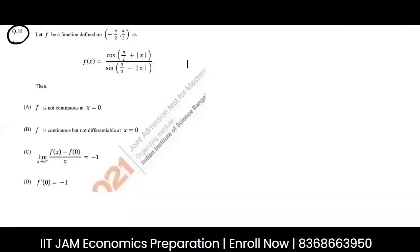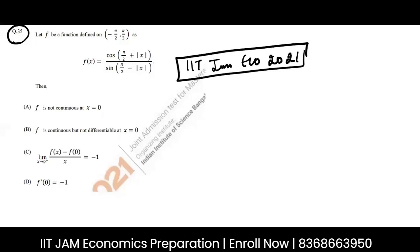I'm going to show you question number 35 of IIT JAM Economics 2021 paper. Let's see what the question is saying. We're given a function and it is asking about continuity, differentiability, and limits.